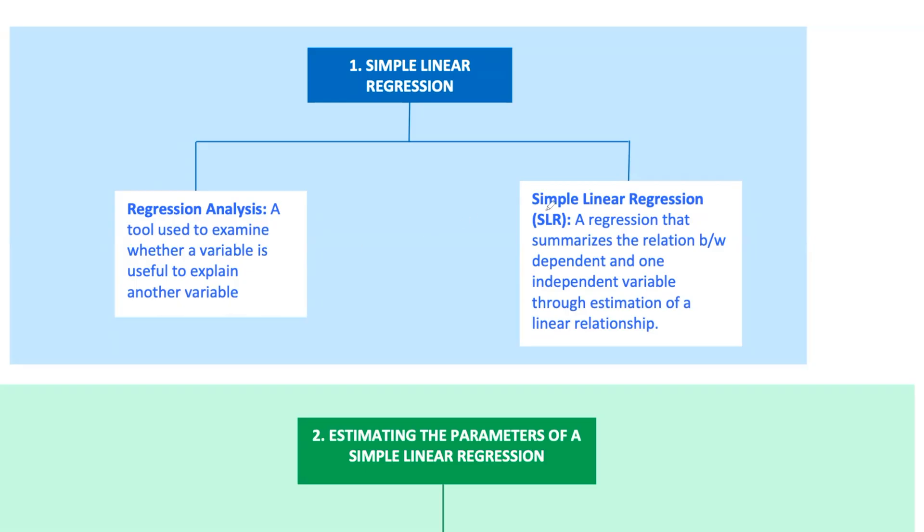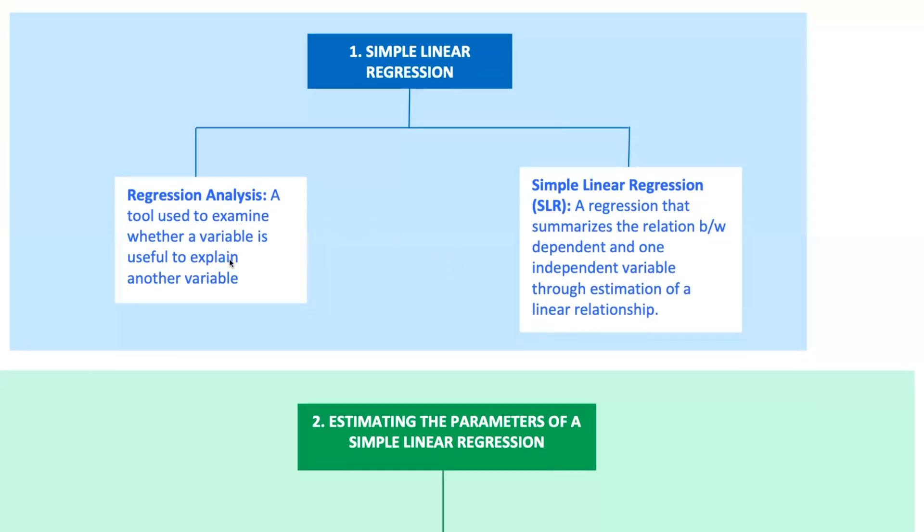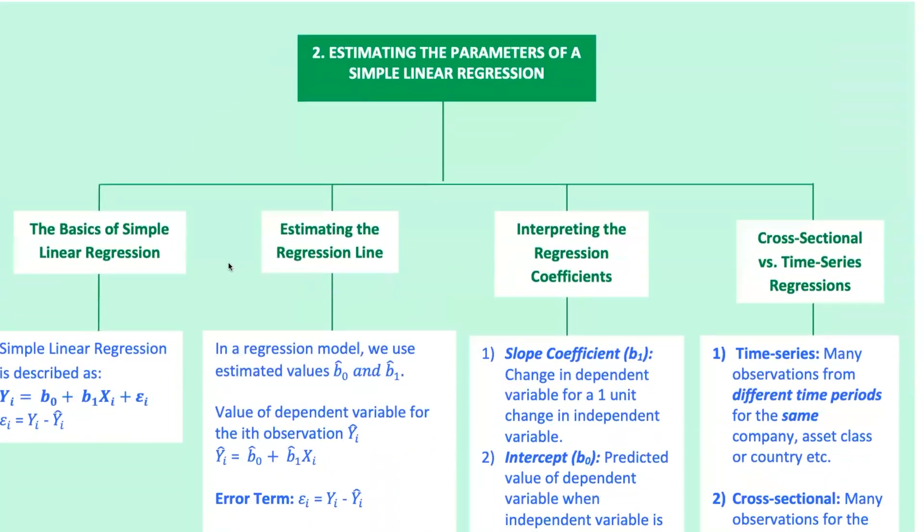Simple linear regression, SLR, is the simplest form of this analysis where we look at just one independent variable, x, and see how it affects a dependent variable, y. Simple linear regression summarizes the relationship between a dependent variable and one independent variable by estimating a linear relationship. When more than one variable is used, it's called multiple regression. But we're keeping it simple here with just one variable.